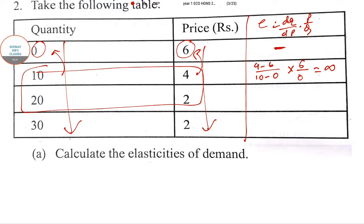Next is 2 to 4: (2 - 4)/(20 - 10) times the previous price 4 and previous quantity 10. So this is -2/10 times 4/10, which is -8/100, so -0.08.